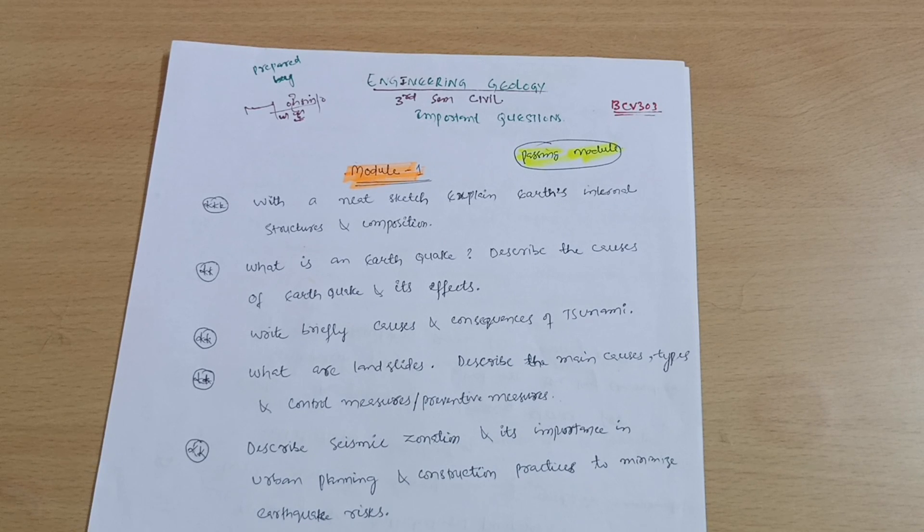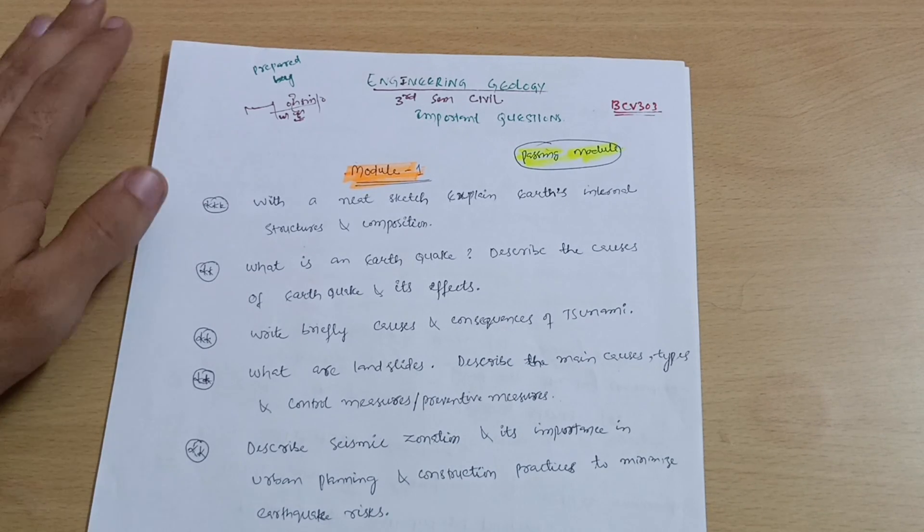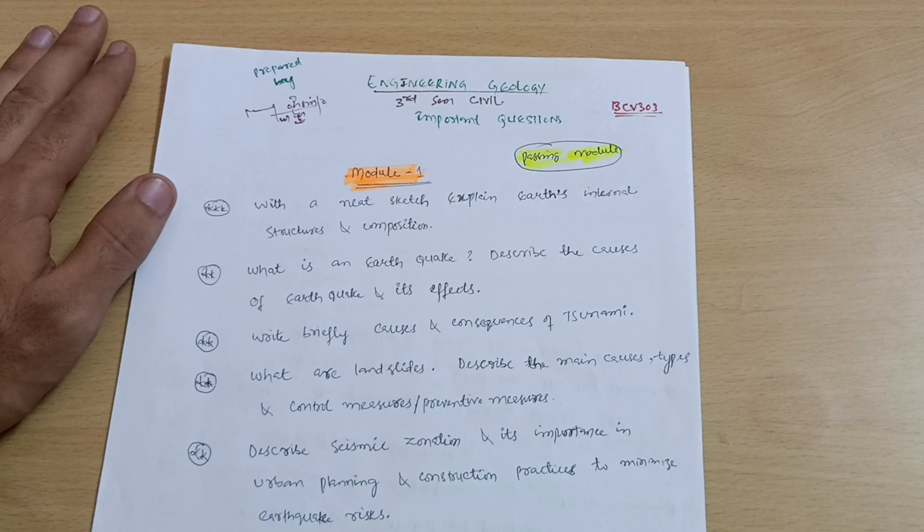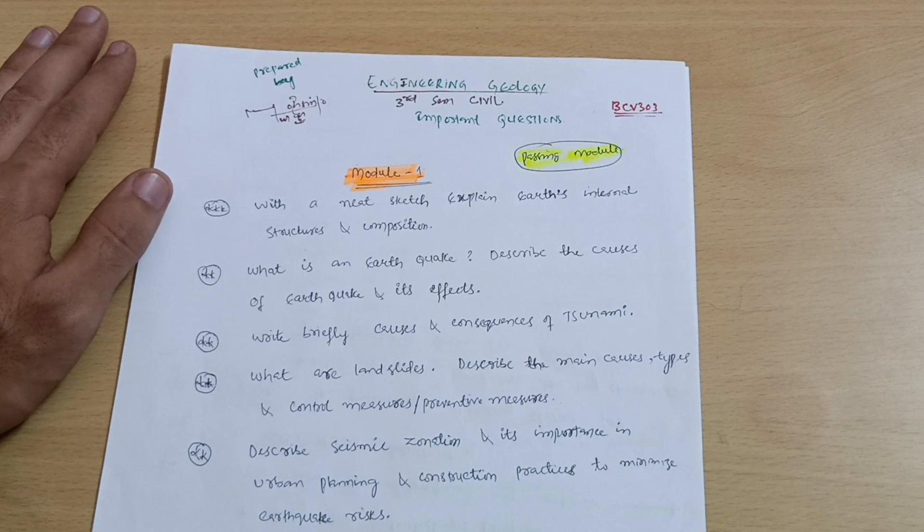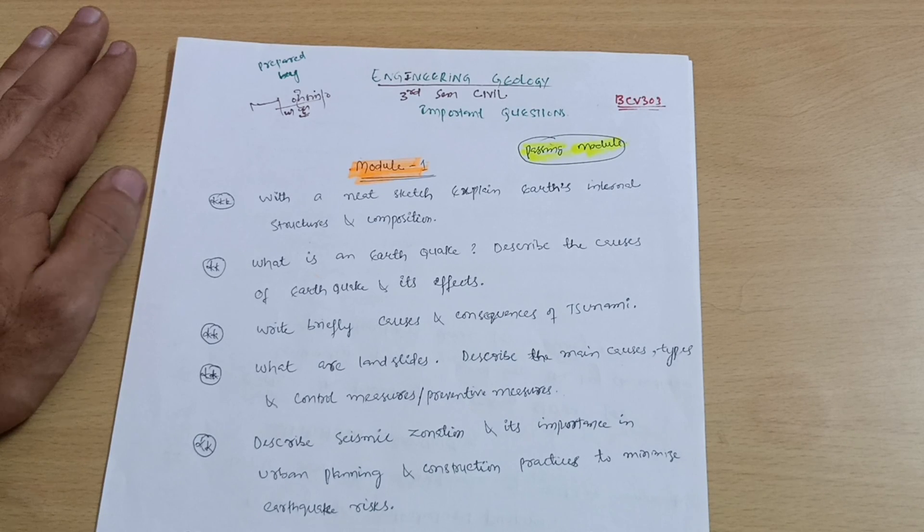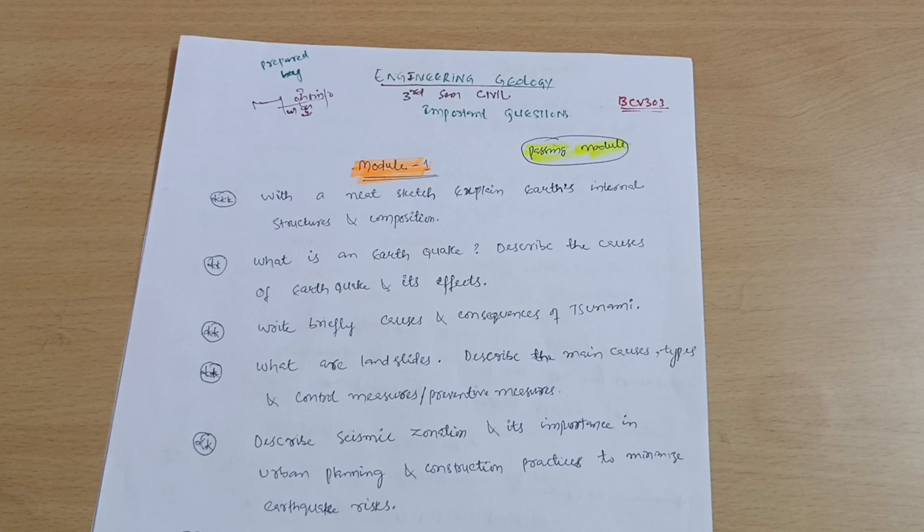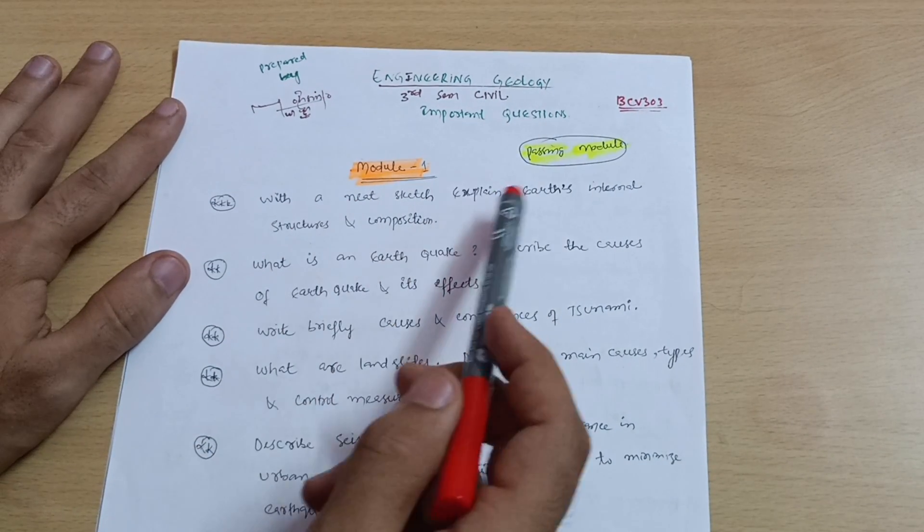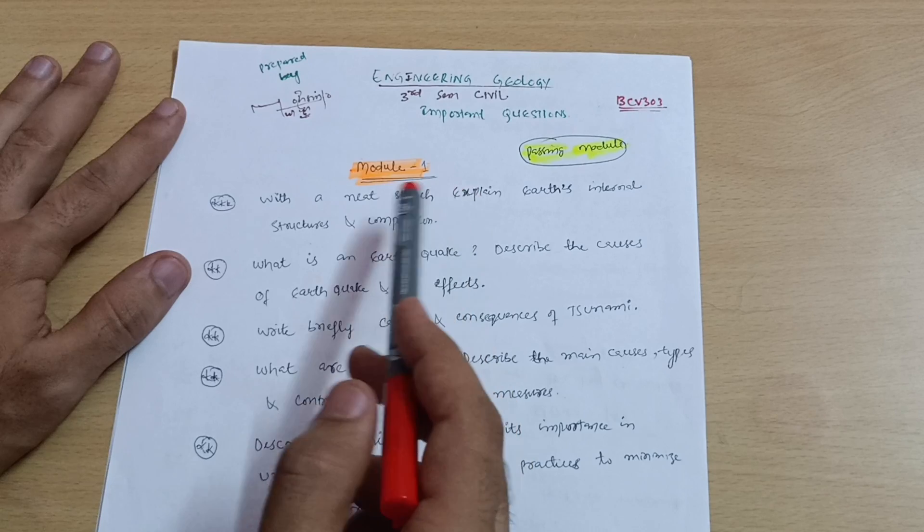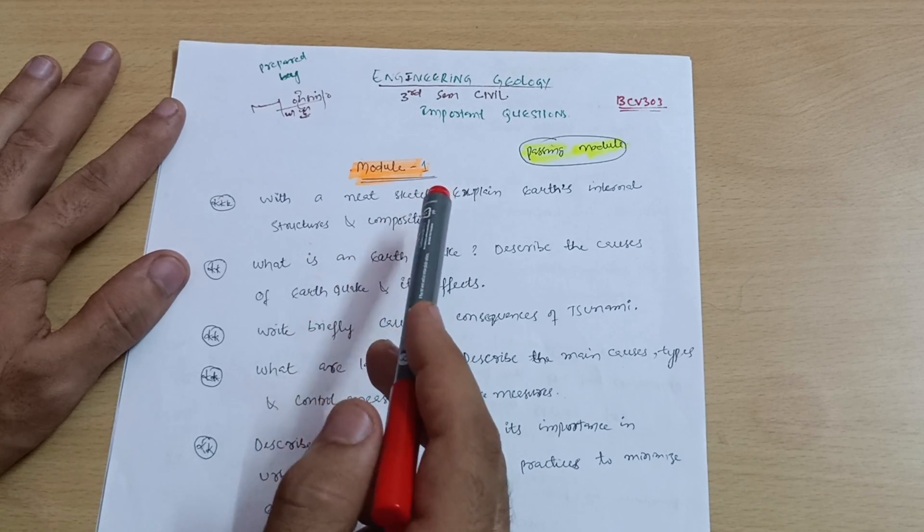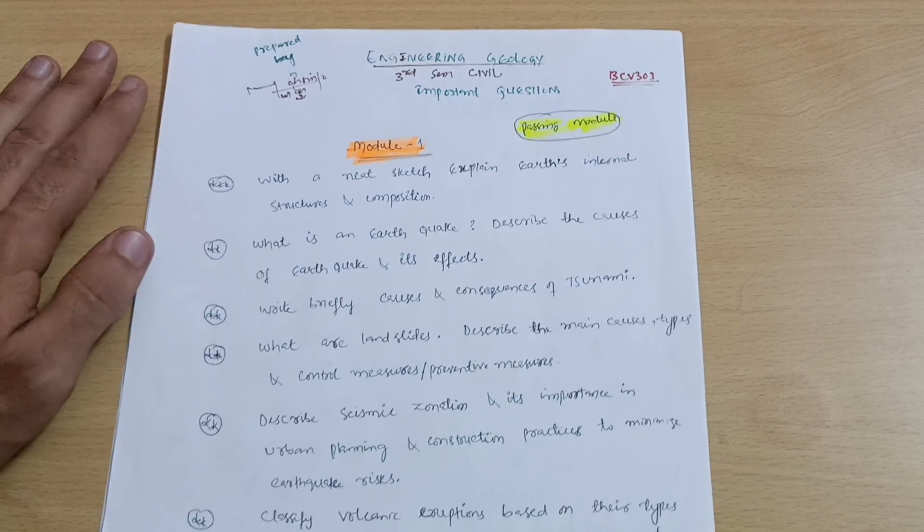As much as possible you should fill the pages, quantitatively and qualitatively also. The heading should be the best, the footer should be good, and in between you can write down the theory, whatever concepts you have understood, in your own convenient language. That is better. Fill as many pages as possible for theoretical subjects.